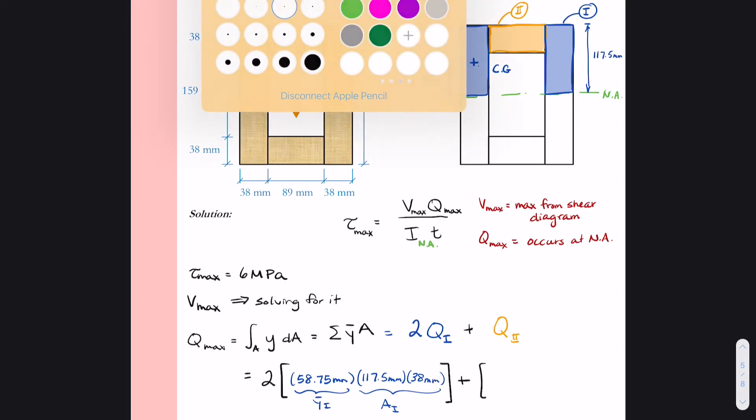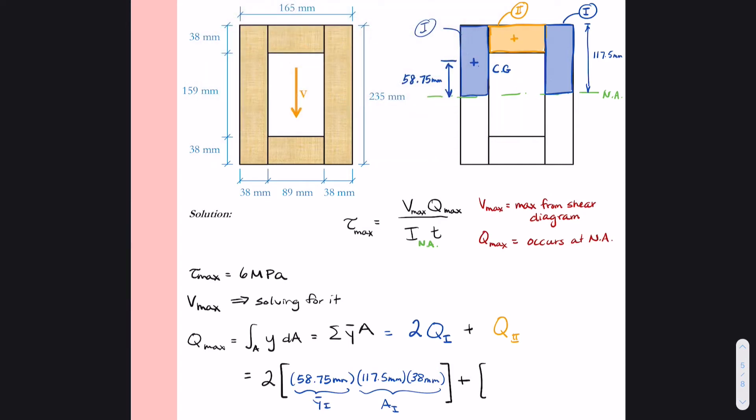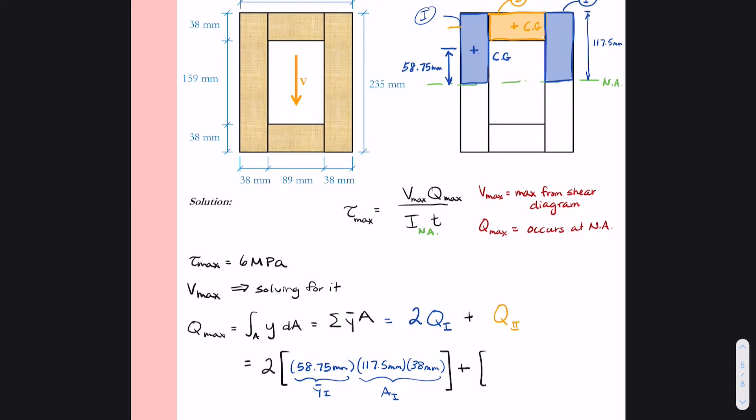Now we look at the orange rectangle. The orange rectangle, the center of gravity, is situated right there. So to figure out Y bar, I know that it's a distance of 117.5 millimeters from the neutral axis to the top of the cross section, and I know that center of gravity is halfway down or half of 38 millimeters.